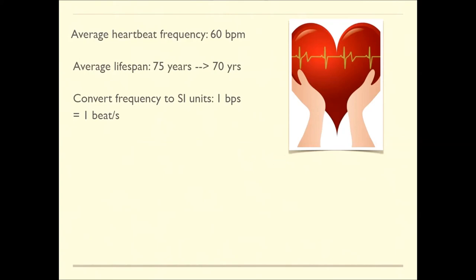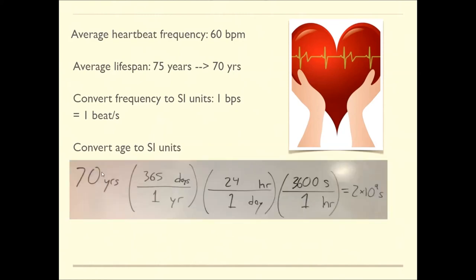We need to convert this frequency, beats per minute, into SI units, which would be beats per second. 60 beats per minute divided by 60 gives us beats per second - 1 beat per second, and that's what we found when we took our pulses. In addition, we need to convert the age to SI units. This is going to be a challenge with many steps, because we have 70 years and I want to convert that to seconds.